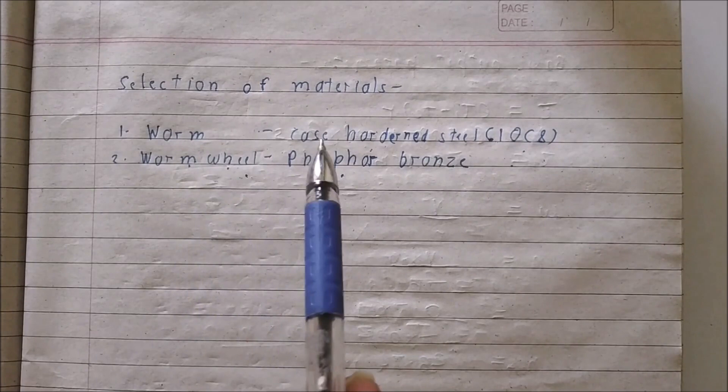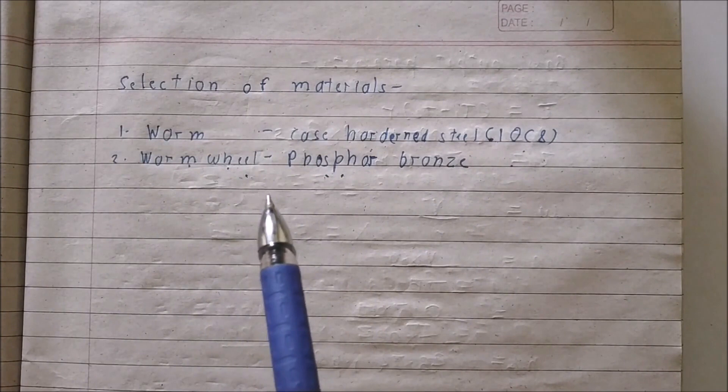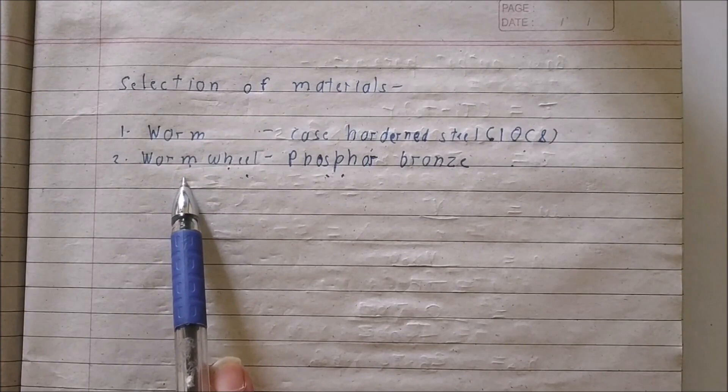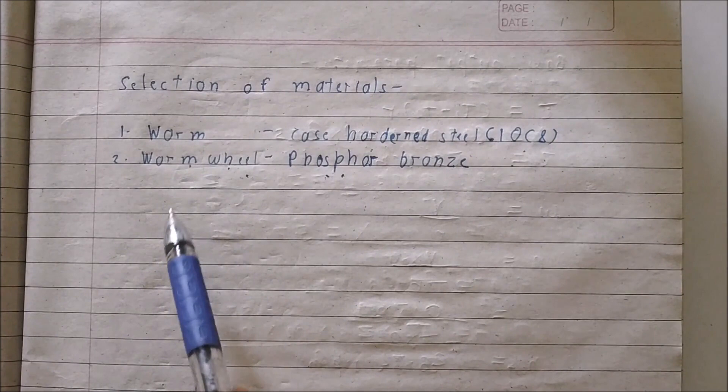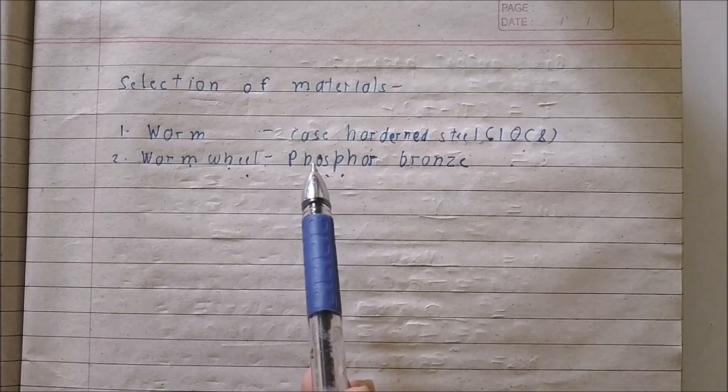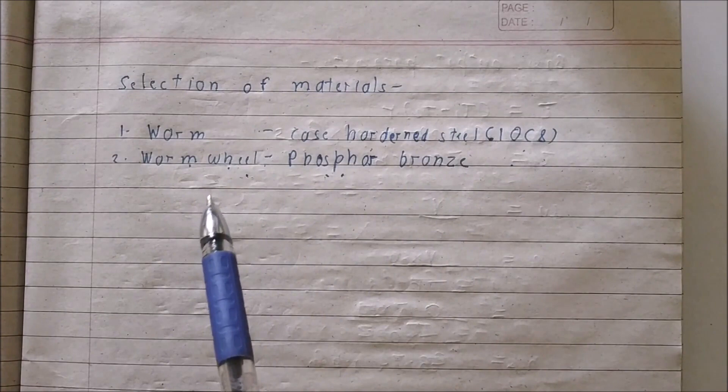Let's select our materials. I have selected case hardened steel for the worm and phosphor bronze for the worm wheel. Phosphor bronze is a weaker material than case hardened steel. The reason for its selection is that the worm can be manufactured accurately, but due to the very intricate shape of the worm wheel, it is difficult to manufacture. So we put them together and the worm wheel will deform on the first run and automatically get its correct shape. That is why we use a weaker material for the worm wheel — it deforms easily.